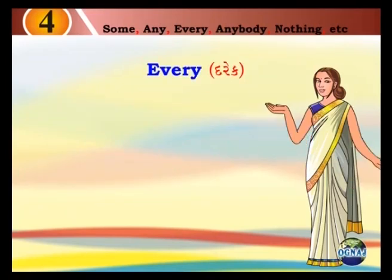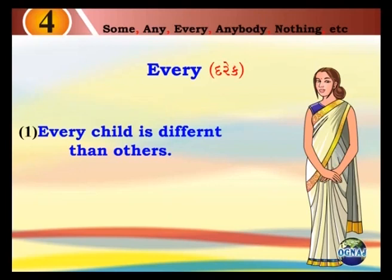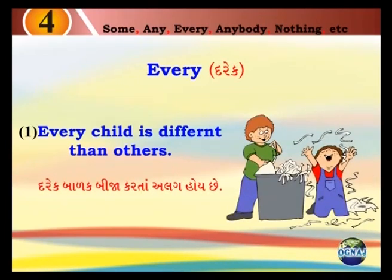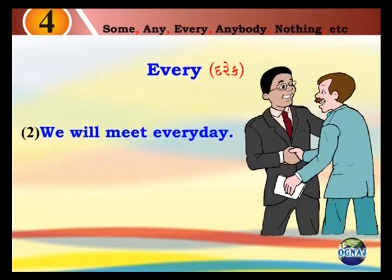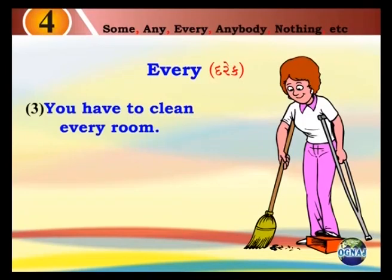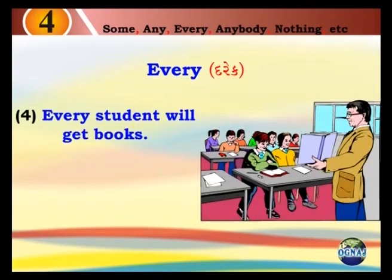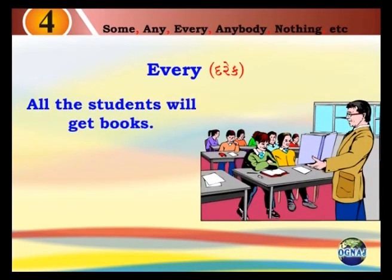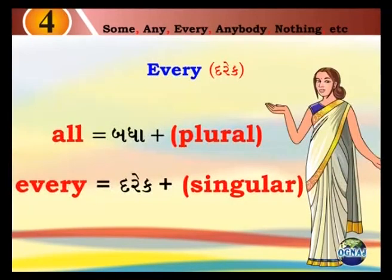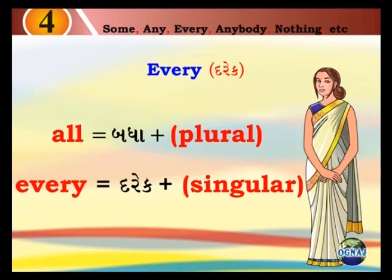Every. Derek. Every child is different than others. We will meet everyday. Aapne darrhoj mahi shiun. You have to clean every room. Tamaare derek room saaf karvaana che. Every student will get books. Derek vithyarthi nye chaupadiyo mahi shi. All the students will get books. Baddhaj vithyarthiyo nye pustakko mahi shi. All is equal to baddha plus plural. Every is equal to derek plus singular.